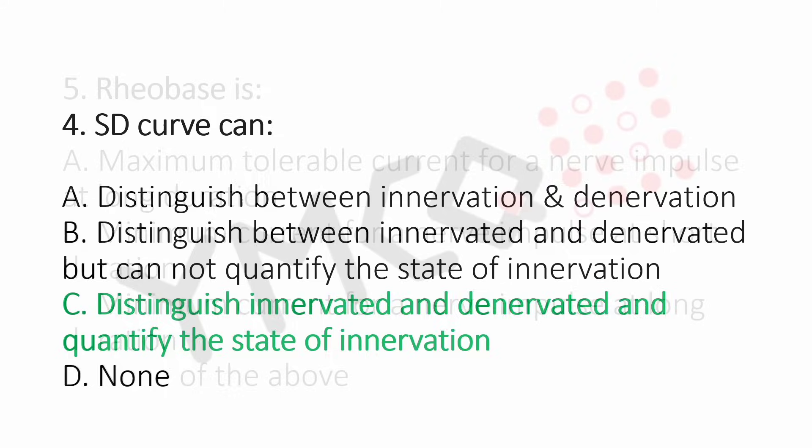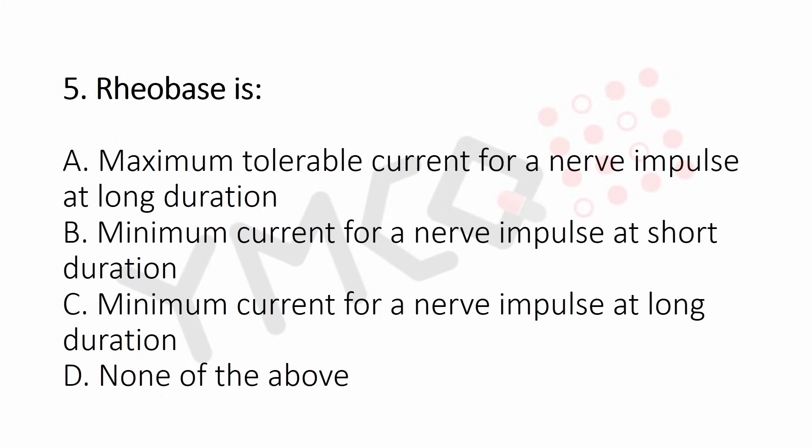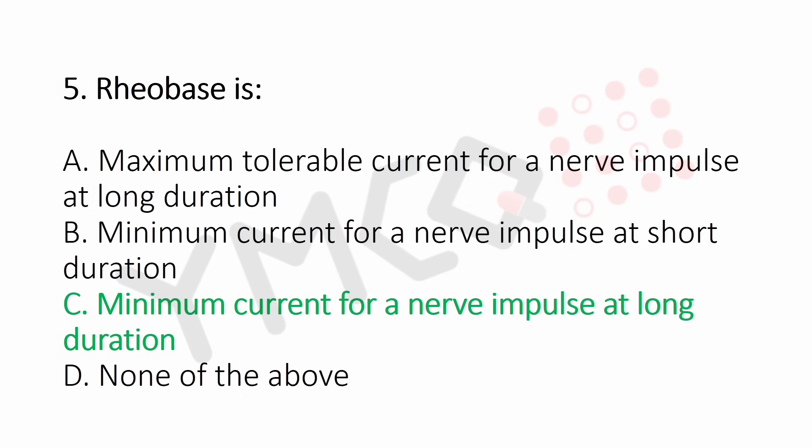Question 5: Chronaxie is — Option A: maximum tolerable current for a nerve impulse at long duration, Option B: minimum current for a nerve impulse at short duration, Option C: minimum current for a nerve impulse at long duration, Option D: none of the above. The answer is Option C: minimum current for a nerve impulse at long duration.